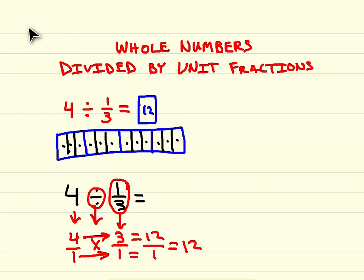So we have four being divided by one-third. The easiest way, if you have a unit fraction like one-third in the divisor spot, is just multiply your whole number times your denominator, four times three, and you'll get twelve.